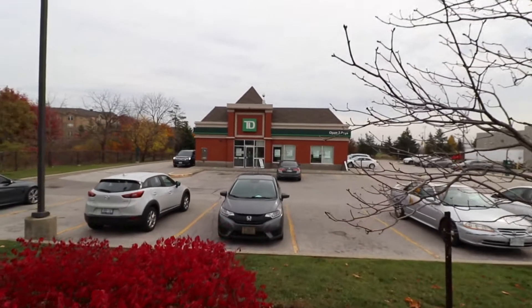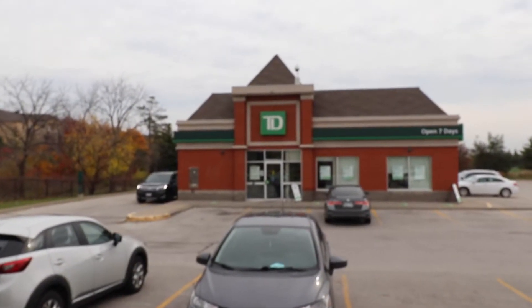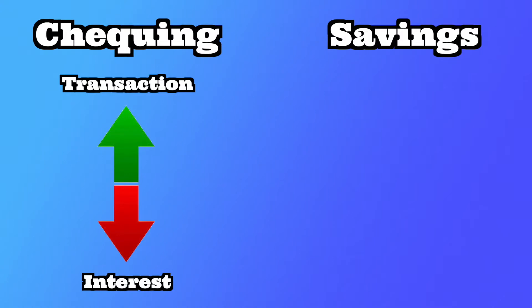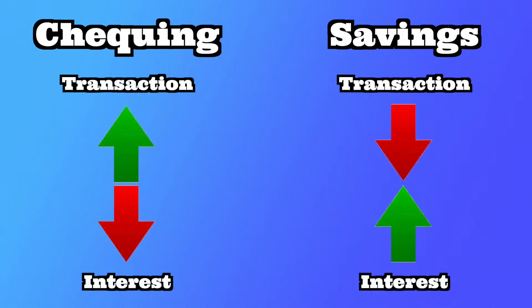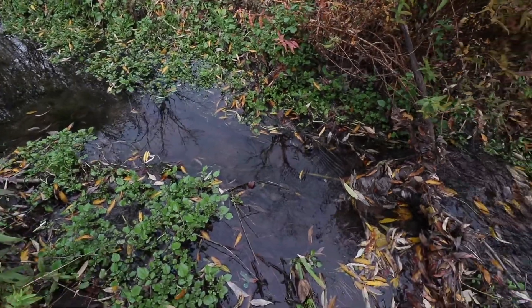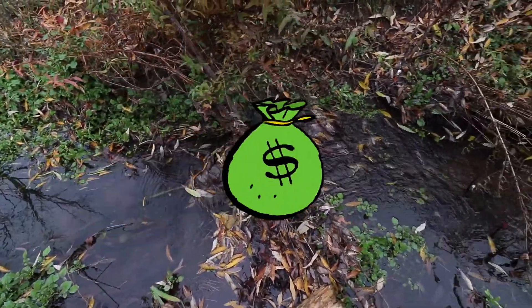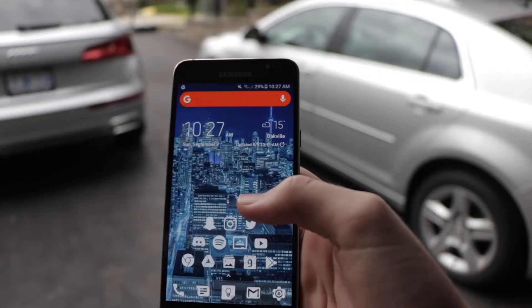Number one: bank accounts. Know the difference between checking and savings and use them correctly. Checking accounts are high transaction, little or no interest, for everyday spending. Savings accounts are low transaction, higher interest, for growing your money over time. Extra pro tip: automate your savings so you can keep that sweet sweet interest flowing in.